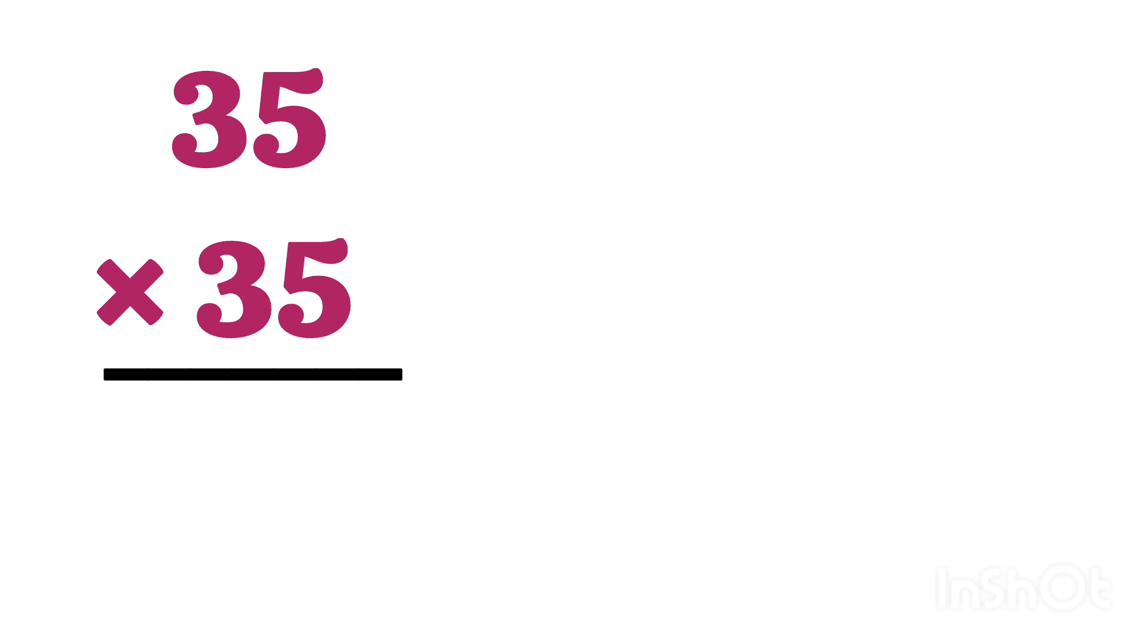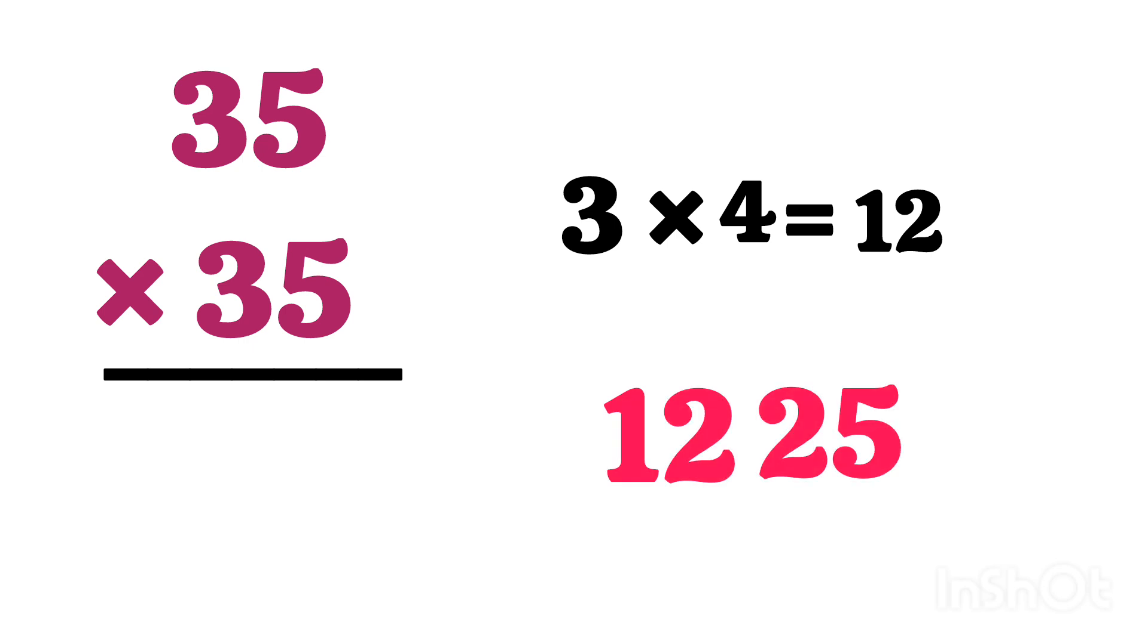So the trick here is to multiply 3 with the next number, or 4, we get 12, and simply then add 25 to it. So it will be 1225 and that's it. Faster than a calculator.